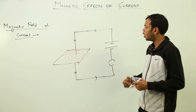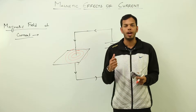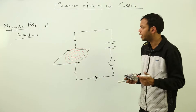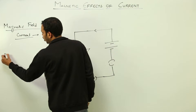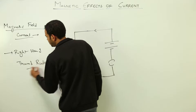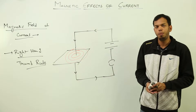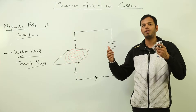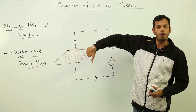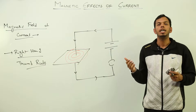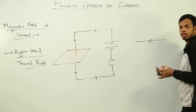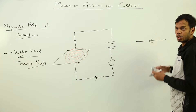Now, if we have to find a rule to determine the direction of the magnetic field and represent it somehow, we use a rule called the right-hand thumb rule. It states: place the thumb of your right hand — you must use the right hand only — in the direction of flow of current. The curling of the fingers then gives the direction of the magnetic field. So if current is going in this direction, curling of fingers is like this.